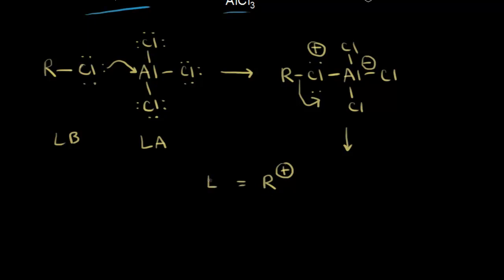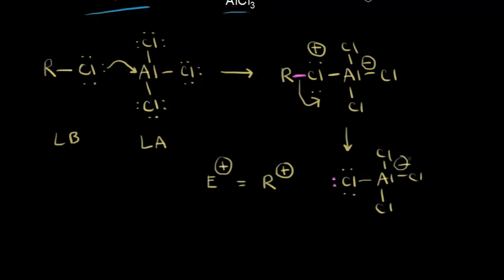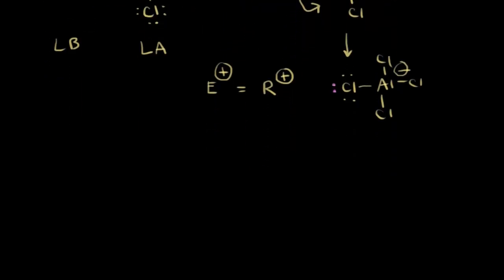This carbocation is our electrophile in the mechanism for electrophilic aromatic substitution. Since we actually form a carbocation intermediate in this mechanism, rearrangement is possible. We have to be careful when predicting products in a Friedel-Crafts alkylation. The aluminum remains bonded to the chlorines, and the chlorine now has three lone pairs of electrons — the electrons that were in the bond between the R group and chlorine.